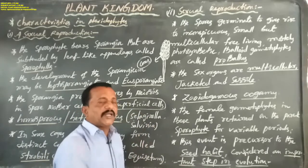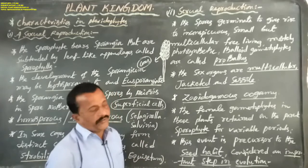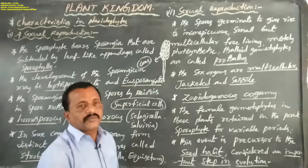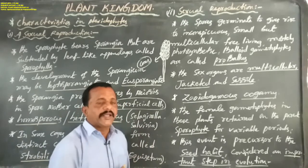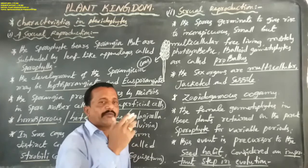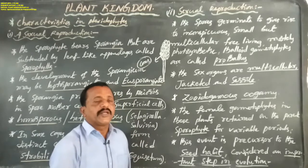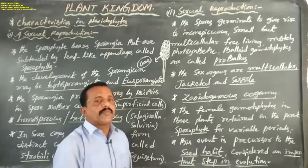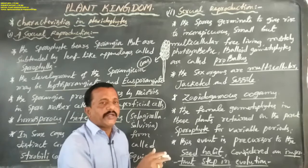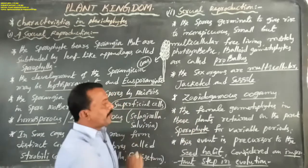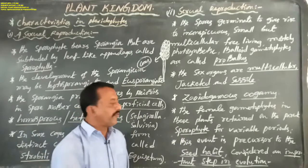The motile male gamete fuses with the female gametophyte's egg cell. The male gamete fuses within the female gametophyte's egg cell to form a diploid zygote. After some time, the diploid zygote undergoes mitosis to form an embryo. But in heterosporous pteridophytes, the female gametophyte is always retained on the parent sporophyte for variable periods.